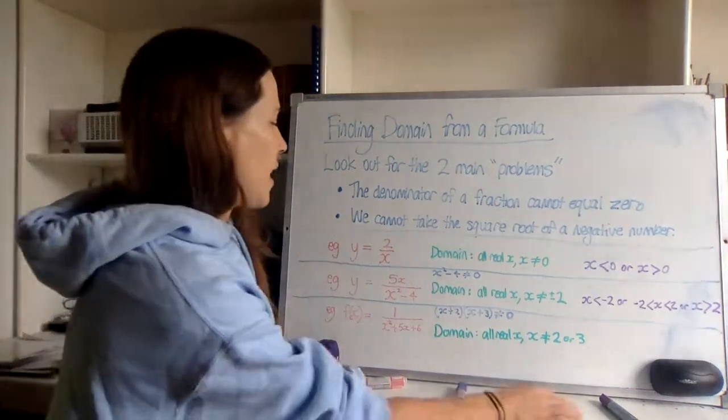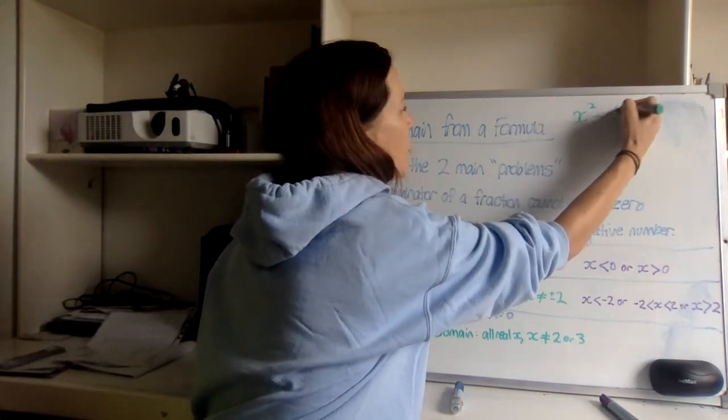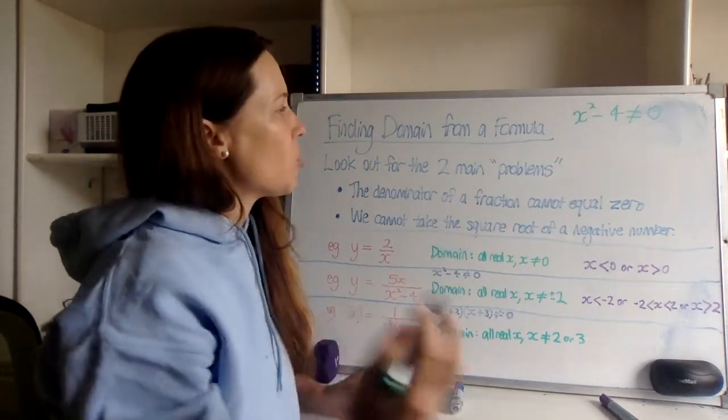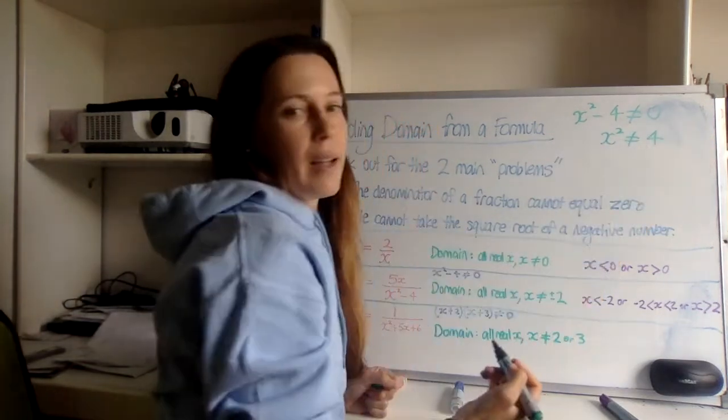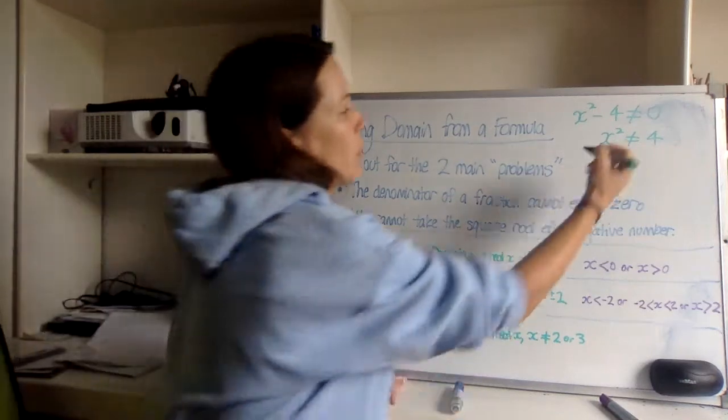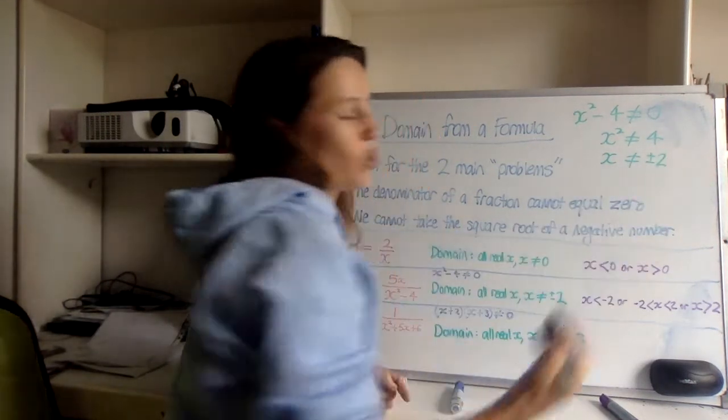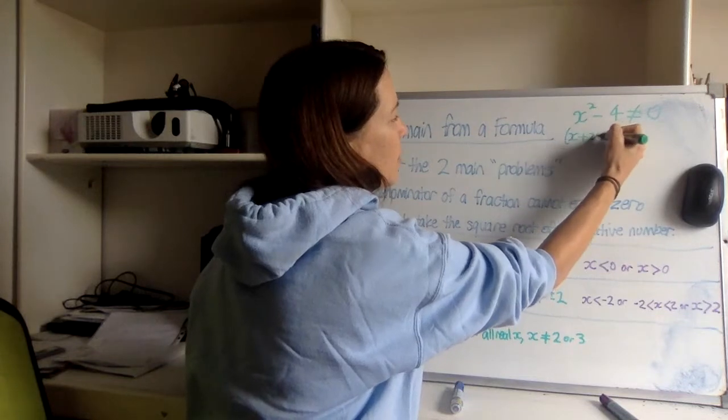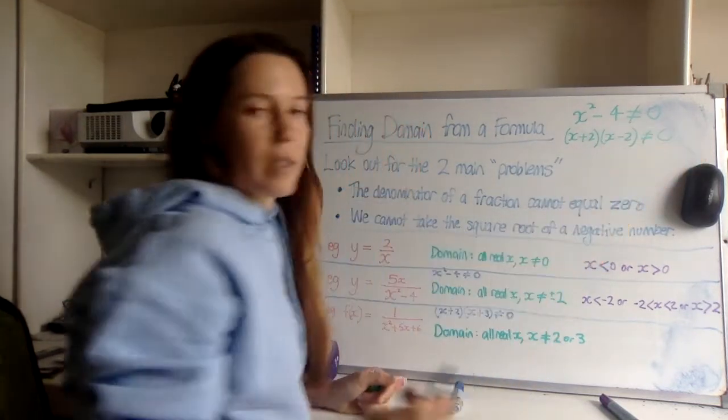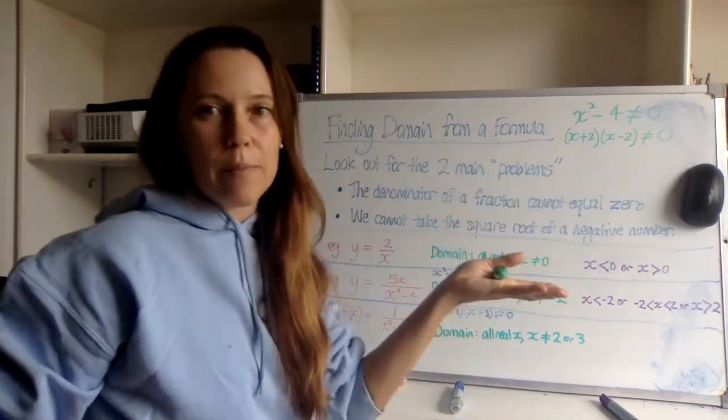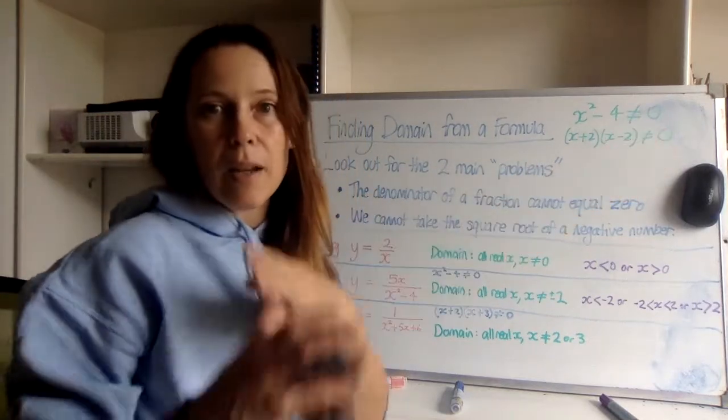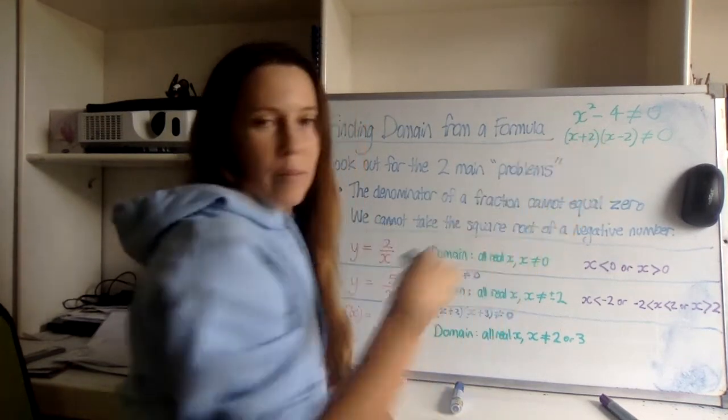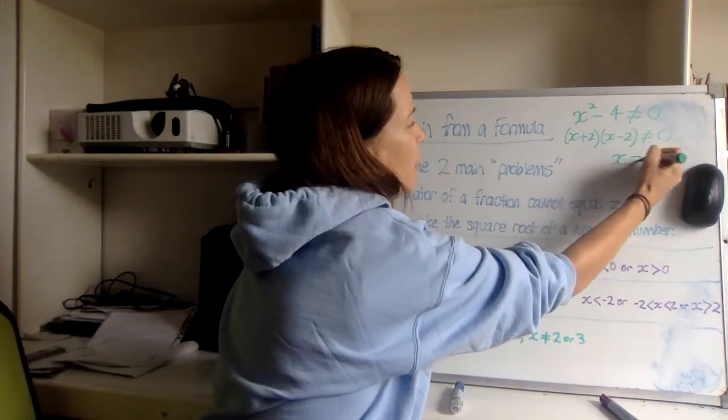Now there's two ways you could go from there. You might just spot that this part can't be 4 so x can't be positive or negative 2. If you can spot that that's great, but it's also handy to know some strategies. If you're solving x² - 4 is not equal to zero, it's exactly the same as solving it with an equal sign, it's just we're using a not equal sign. Two ways you could go: you could add 4 to both sides, or you could spot the difference of two squares and factorize it and say this is (x + 2)(x - 2) not equal to zero. Here we can say if two things are multiplying and can't be zero, neither one of them can be zero. You can see there that x can't be negative 2 and x can't be positive 2.